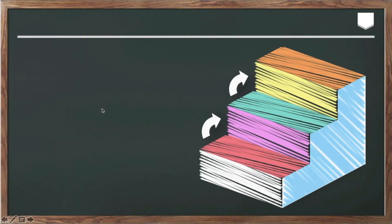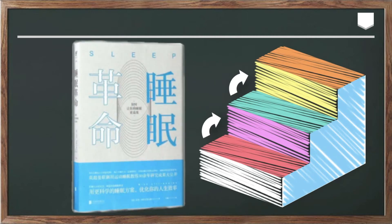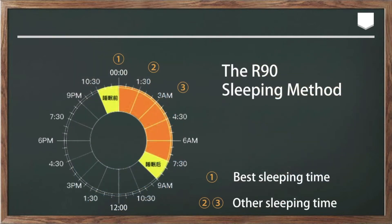Now let's take a look at an expert's opinion. Here we have Nick Little-Hales, a famous sleeping instructor who had studied sleep for over 30 years. In his book Sleep, he proposed the R90 sleeping method. It is the best time to be in a sleeping condition at midnight. In his opinion, he also recommended to sleep at 1:30 or 3 a.m. if you cannot finish your work in time.